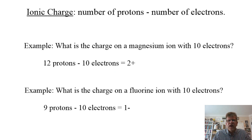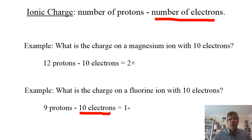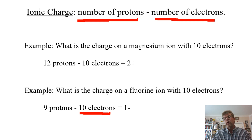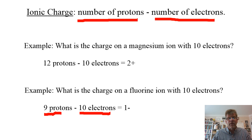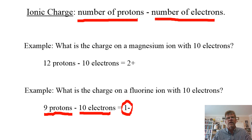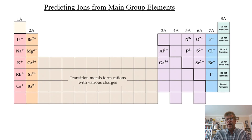Similarly, what is the charge on a fluorine ion with 10 electrons? We go to the periodic table, find F, and the atomic number on top is 9 — that is always the number of protons. Nine minus 10 is a single negative charge. Thus, calculation of ionic charge in these sorts of questions becomes elementary.